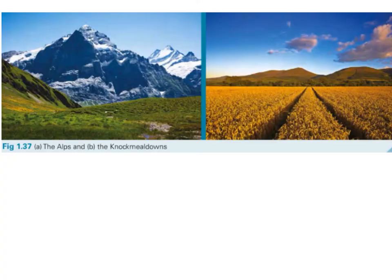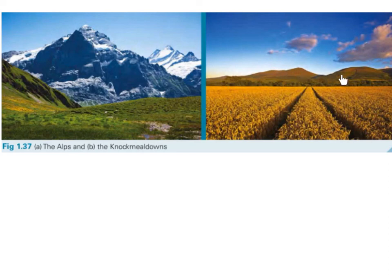Here we have two photographs. The one on the left is the Alps in Europe and the one on the right is the Knockmealdowns, the Munster Mountains of Ireland. It is interesting that the Knockmealdowns were once as high as the Alps, but they have been worn down due to weathering.